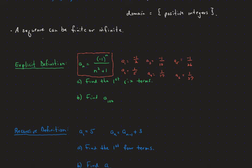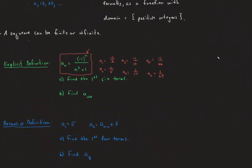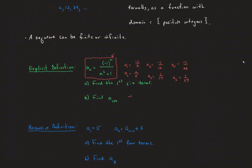A sub 6 is positive 1 over 37. You can see that negative 1 to the n gives us an alternating sign pattern — starting with either positive or negative and alternating. To find a sub 100, we just plug in 100 for n: negative 1 to the 100th over 100 squared plus 1. Since 100 is even, the top is positive 1, and 100 squared is 10,000, so adding 1 gives 10,001. That's the 100th term.